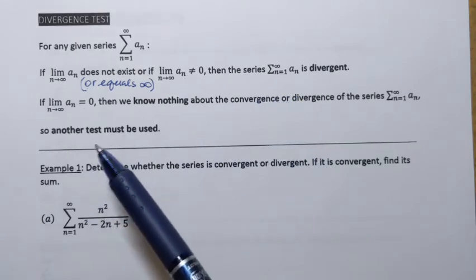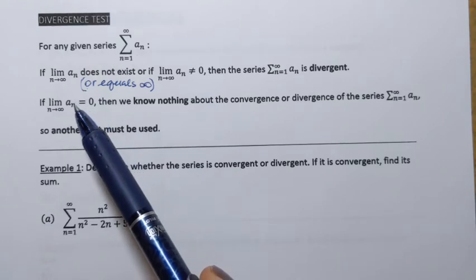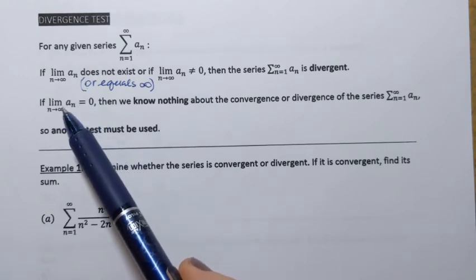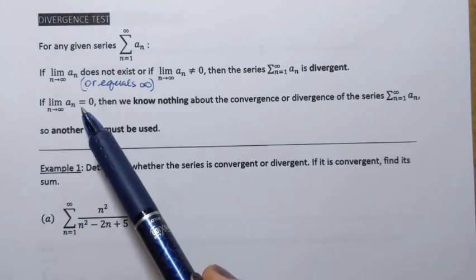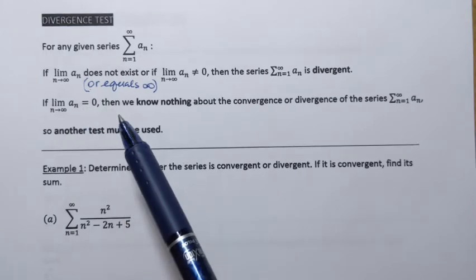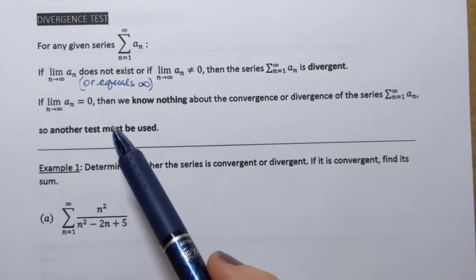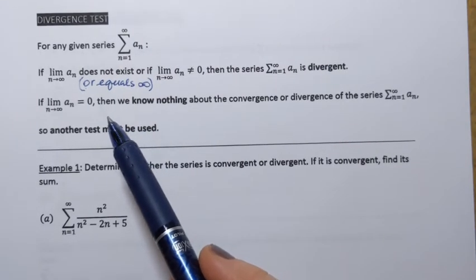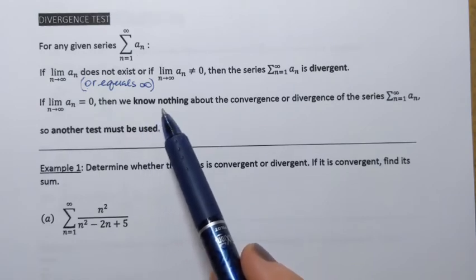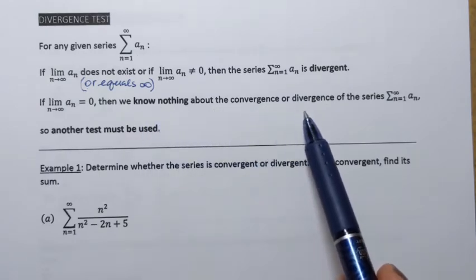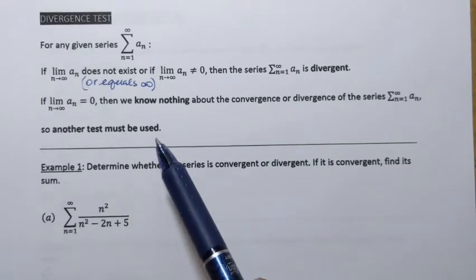However, the only remaining case is when the limit equals zero, meaning the terms of the sequence approach zero. In this case we can't say anything about the series — it's inconclusive for the divergence test, and we know nothing about the convergence or divergence of the series. Another test must be used.